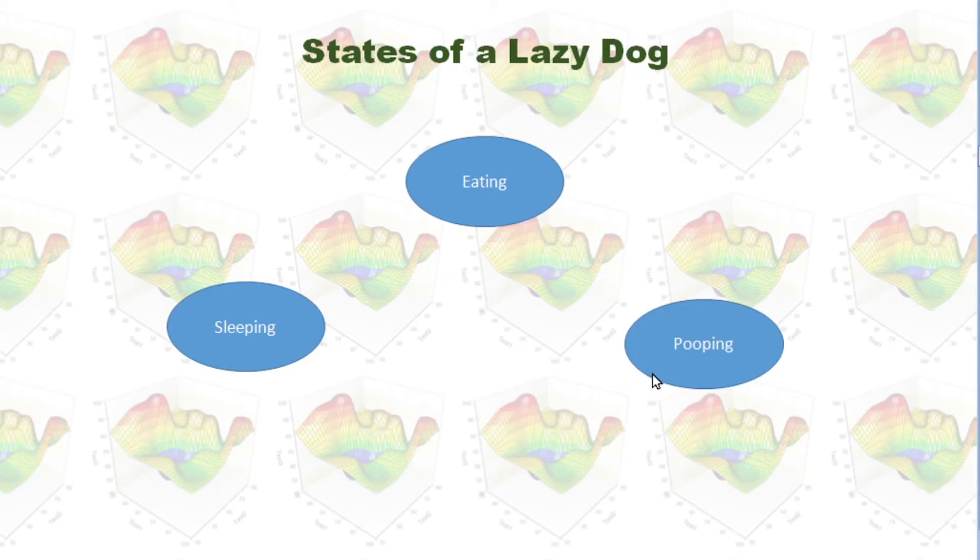Let's take a look at an example. Let's assume we have a lazy dog. This lazy dog will do one of those three things: sleeping, eating, or pooping.